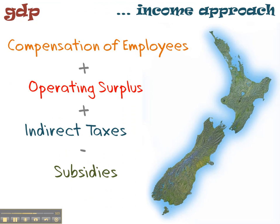The income approach is when we add up all the income that people earn. We take all the earnings by employees — compensation of employees, that's wages and salaries. We add the profit made by firms, called operating surplus. Then we do a couple of adjustments: we add back indirect taxes and take away subsidies, so we get an accurate picture of the actual income people have earned, either working for someone else or running their own business. So those are the two approaches: the expenditure approach and the income approach.